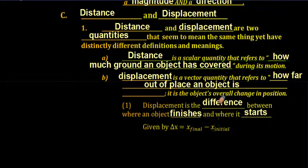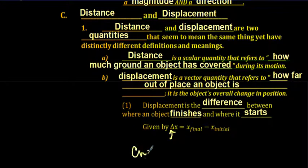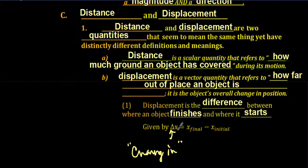Displacement is the difference between where an object finishes and where it starts. The formula for that is given by delta x. Remember, delta means change in. So our change in x — our delta change in position — is our final position minus our initial position.